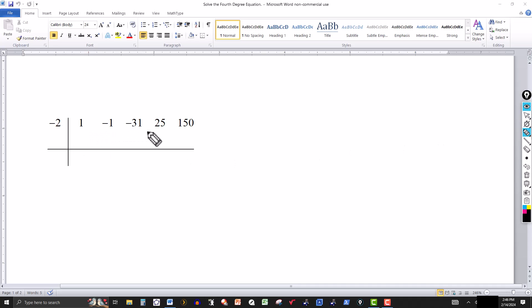Here's the setup then. Those are the coefficients of the polynomial on the left side: 1, negative 1, negative 31, 25, and 150. This is just like dividing the polynomial by x plus 2. We're going to see if this is a zero. If this is a zero, then x minus this, which would make it x plus 2, would be a factor.